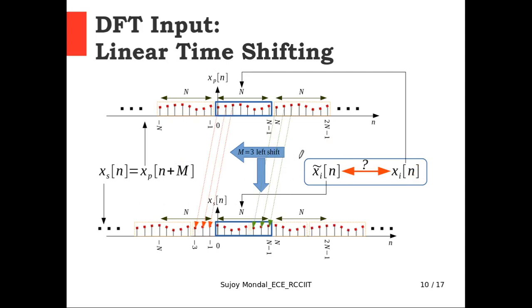Now if we just take a careful look, if we consider m equals to 3, and if we apply left shifting by 3 sample points from this blue window, the first 3 samples will come out. And from the next window, first 3 samples will take entry to this blue box in the new data frame which is represented by x tilde i.